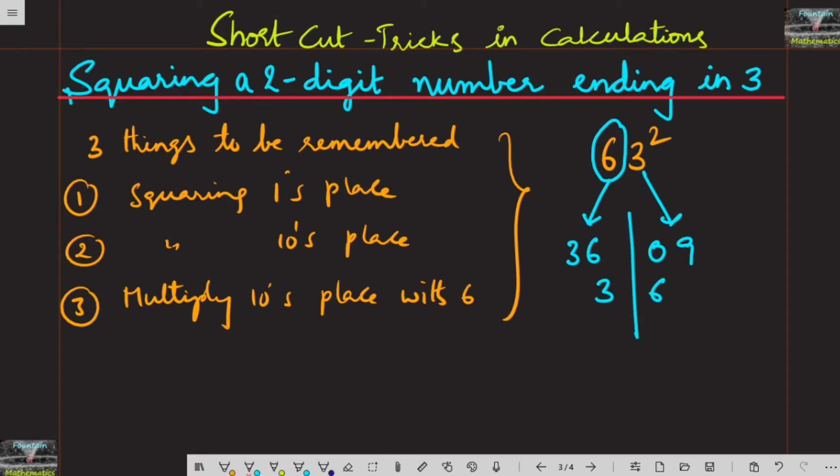Let us divide in two parts and write. So the number is here: 3, 9, 6, 9. So we can give the answer: 63 square is 3,969.